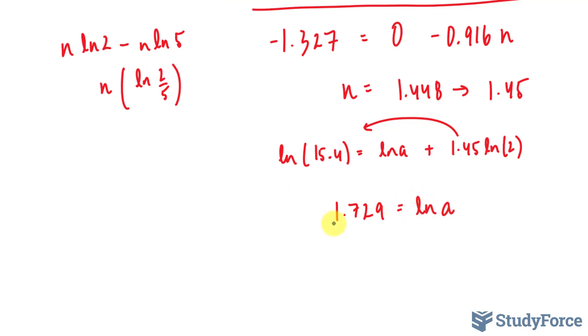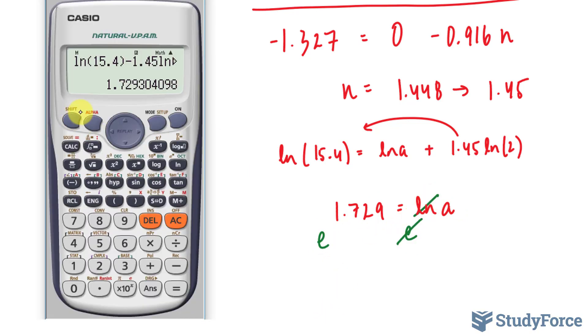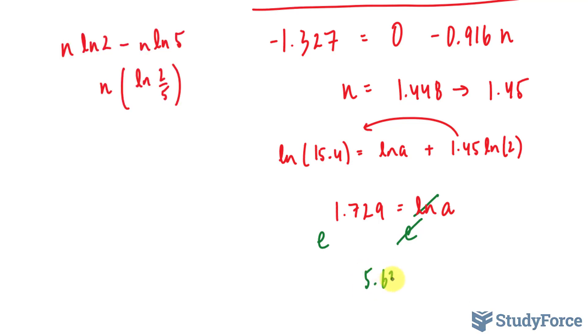We raise both sides as powers to base e. That cancels out. And we're left with e to the power of what we just found. And that's approximately 5.636, or simply 5.64. So I found my a value and my n value. The formula that we had produced was i is equal to av to the power of n. i is equal to 5.64 v to the power of 1.45.